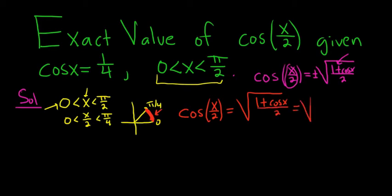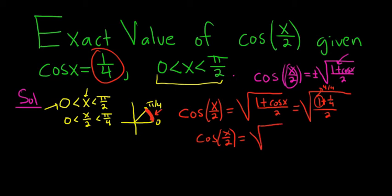This is equal to the square root. Now cosine is just 1 fourth. So this is 1 plus 1 over 4 all over 2. So cosine of x over 2 is equal to - we can think of 1 as 4 fourths, right? That way we can add it to 1 fourth. So 4 fourths plus 1 fourth is 5 fourths. So we have 5 fourths over 2.